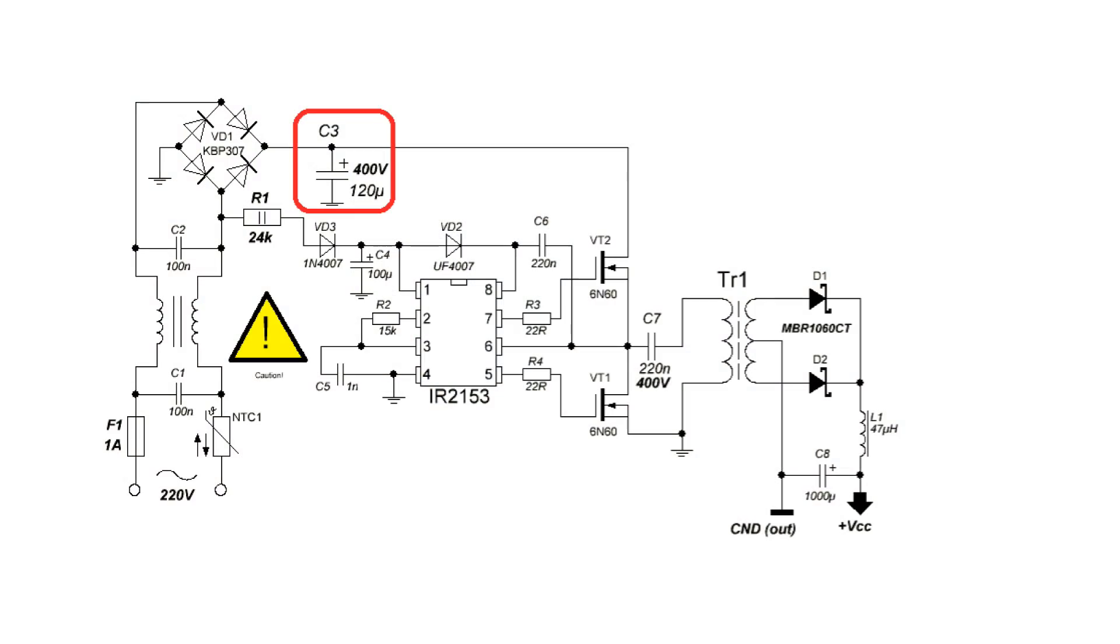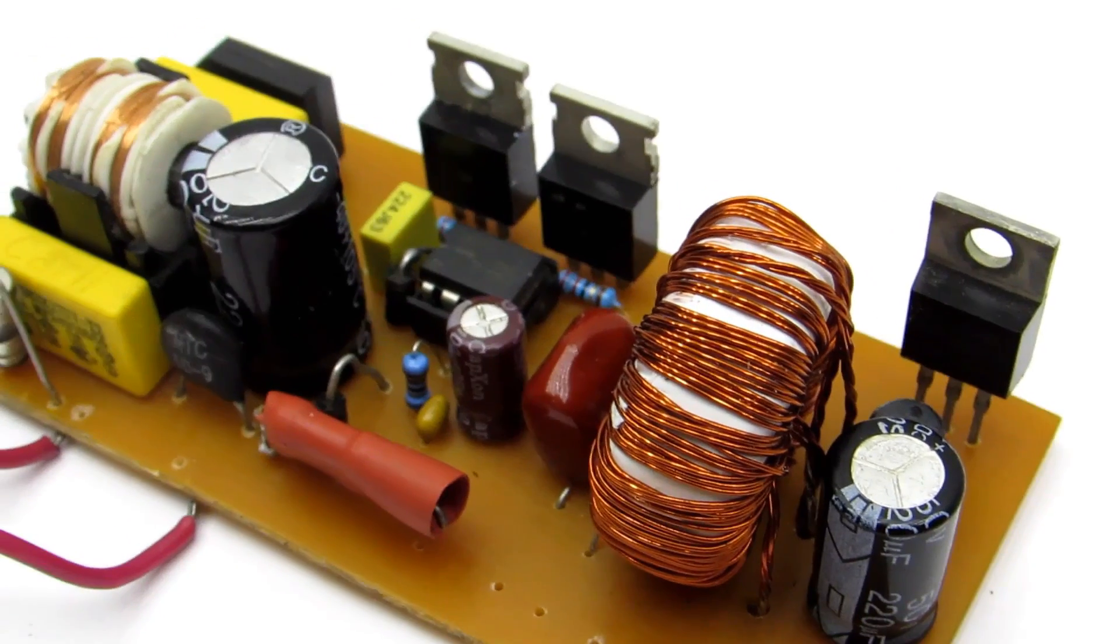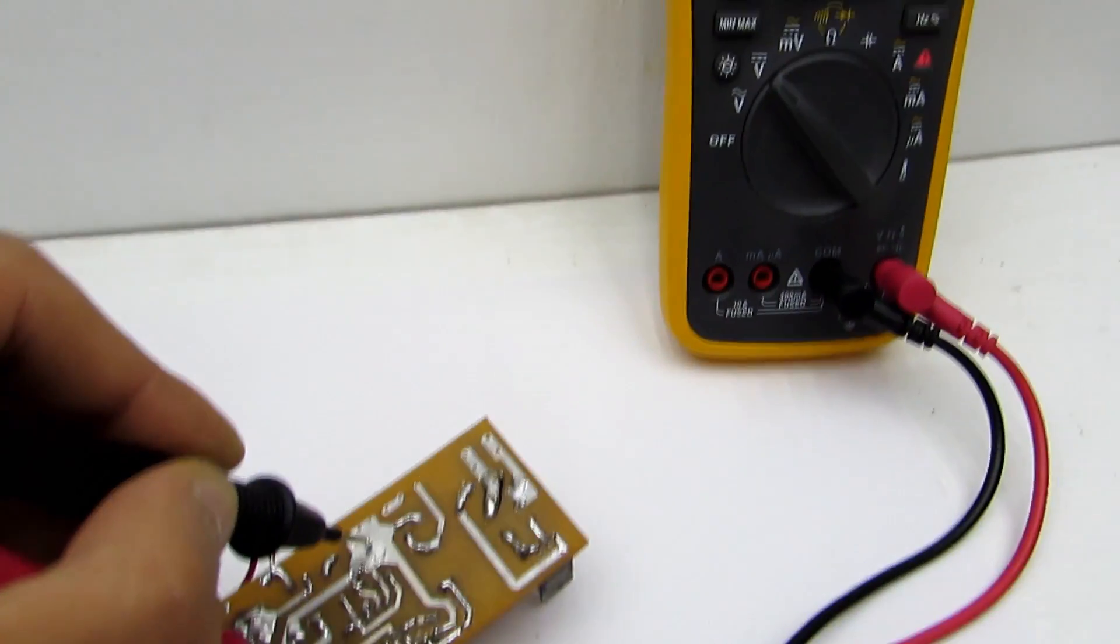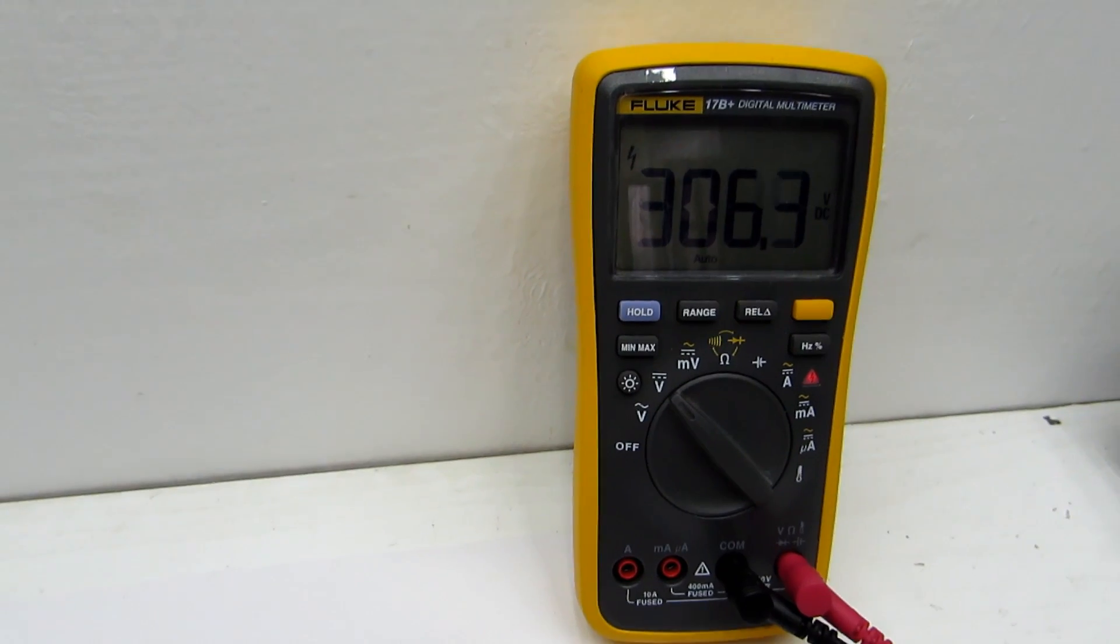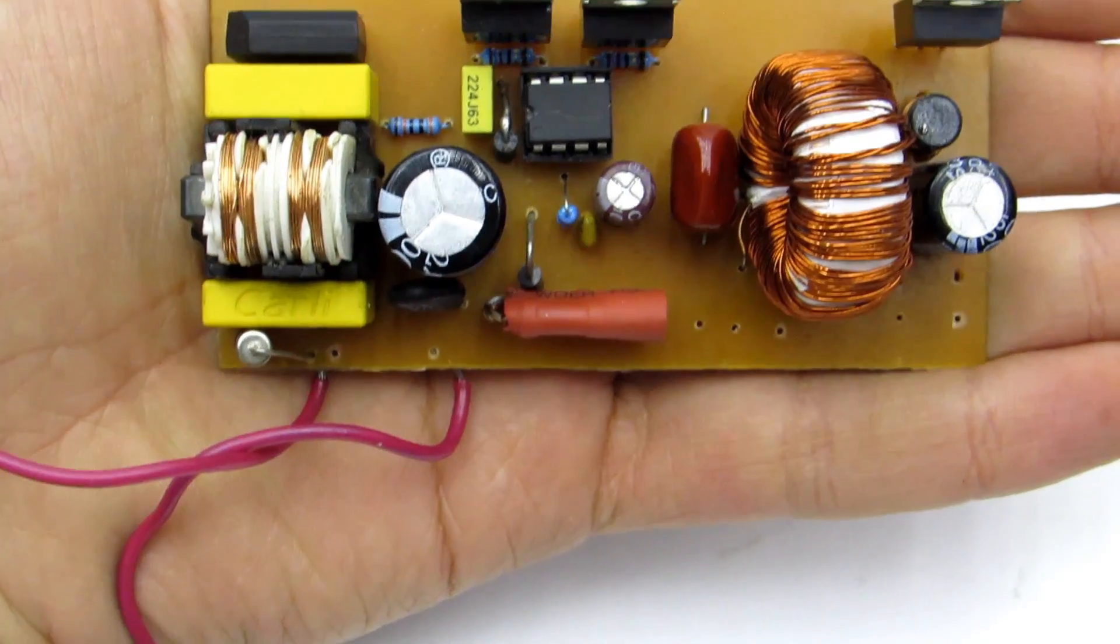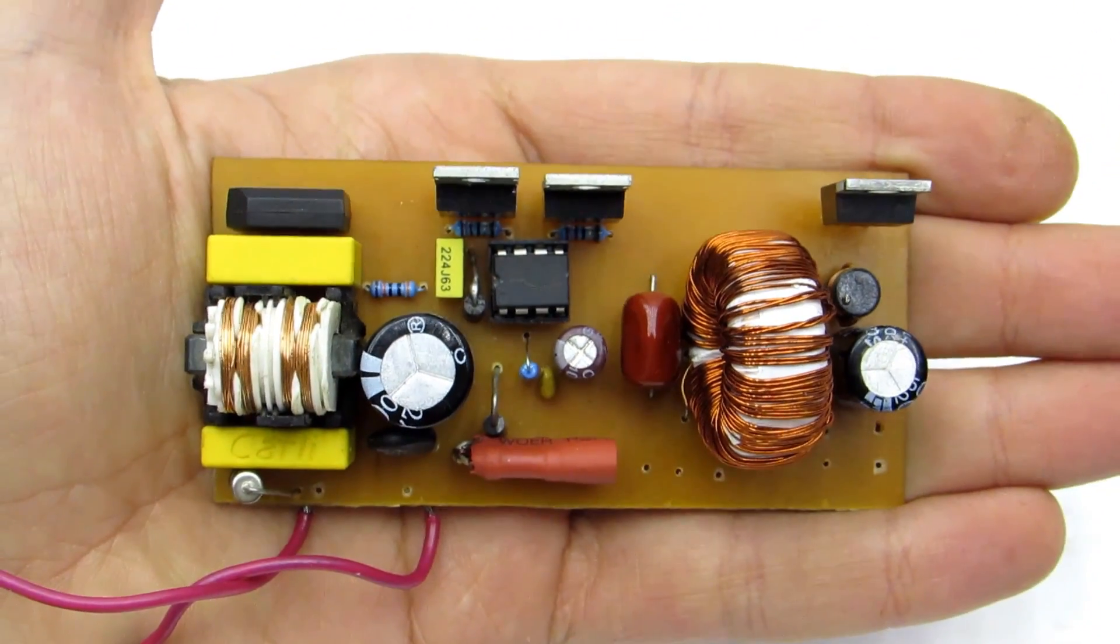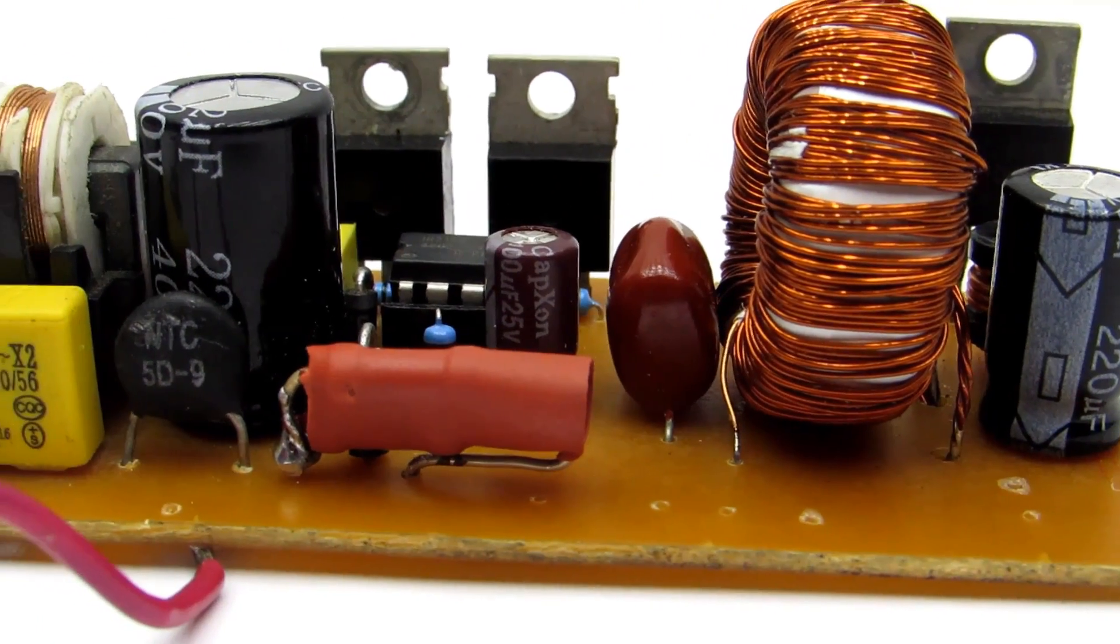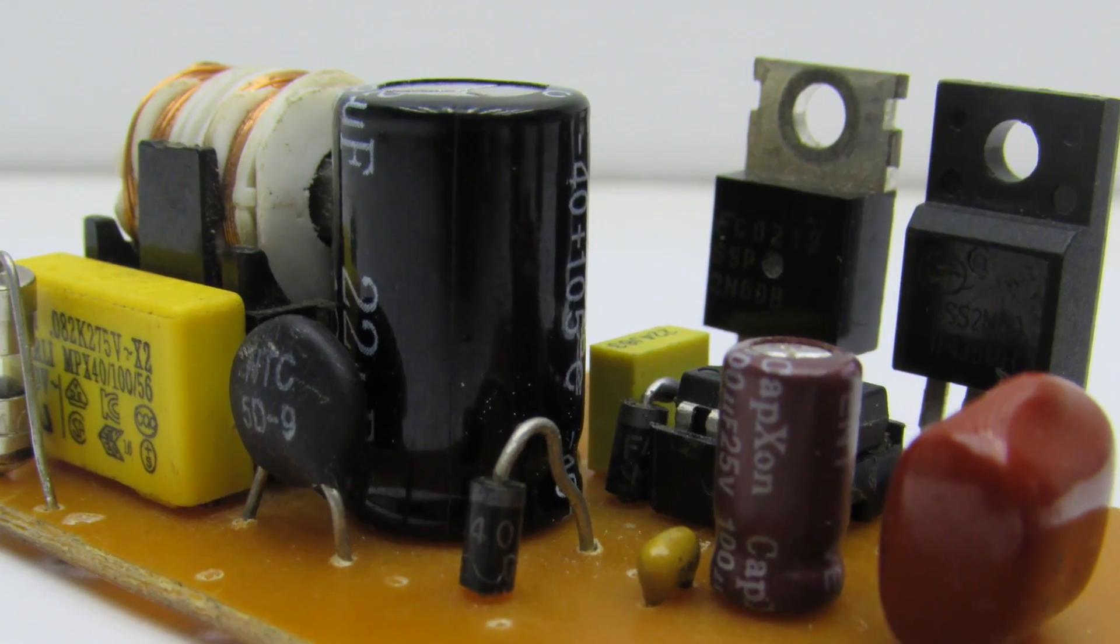Next is a smoothing capacitor. As I have said, it is 400 volts, because the peak value of the mains voltage is about 311 volts. Its capacity is selected from 1 microfarad per 1 watt of power. This is the ideal. But in my case, it is smaller than needed. I just haven't found the right capacitor.